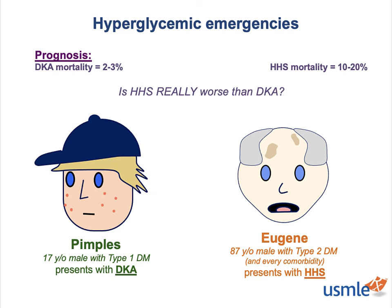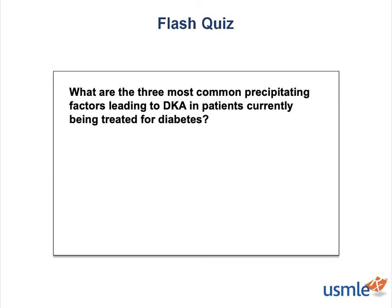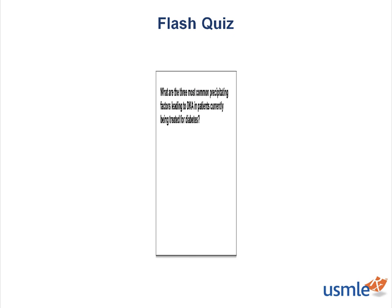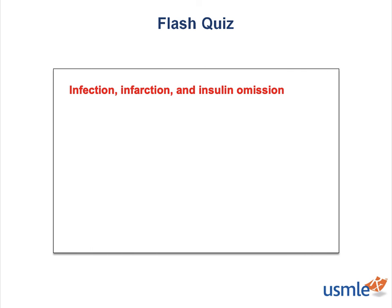That wraps it up for hyperglycemic emergencies. Flash quiz: what are the three most common precipitating factors leading to diabetic ketoacidosis in patients currently being treated for diabetes? The answer is physiologic stressors like infection, myocardial infarction, as well as medication noncompliance — leading to the mnemonic: infection, infarction, and insulin omission.